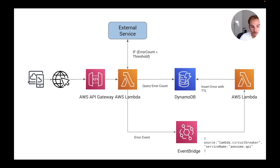The first thing I want to explain is how Lambda pricing works. When you execute your Lambda function, you are charged based on the execution time. But if the Lambda is calling an external service and that external service takes two seconds to reply, you're going to pay for those two seconds because Lambda is waiting there for the response.